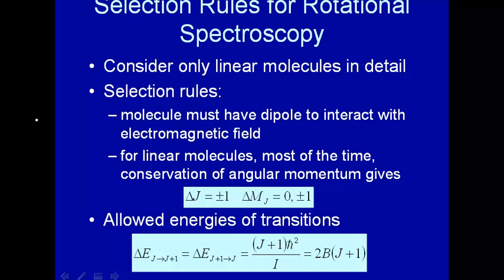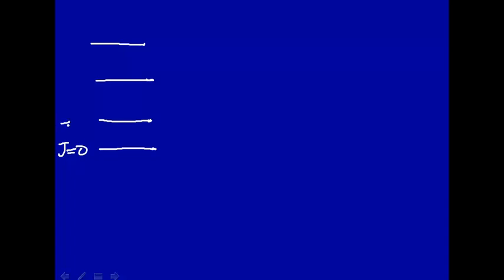You might think for rotational spectroscopy that you can go from any energy level to any other energy level. Remember that the rotational energy levels are quantized and described by quantum number J: J equals 0, J equals 1, and so on. You might think we can go from 0 to 1, or perhaps 0 to 2, or 0 to 3. But it turns out there are selection rules for rotational spectroscopy.